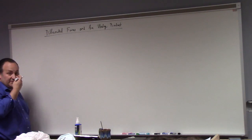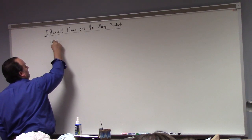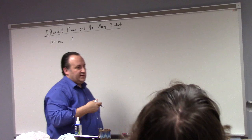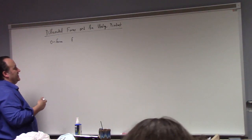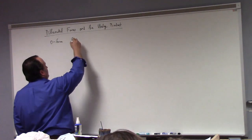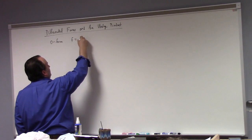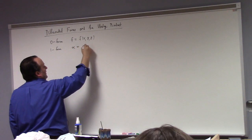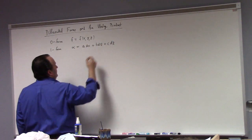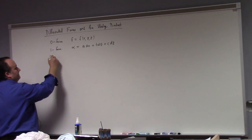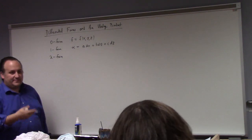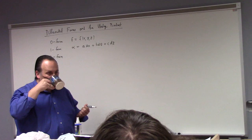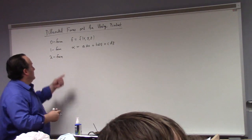Let me start by telling you what differential forms look like. I'll keep the context concrete and look at differential forms in three dimensions because that's a little bit more interesting, though we're mostly interested in two dimensions. A zero form is just a function of three variables. A one form, alpha, has the form A dx plus B dy plus C dz. These things we've seen before — we integrated those in Calculus 3. That was the line integral, remember?